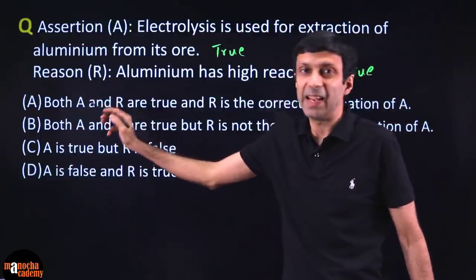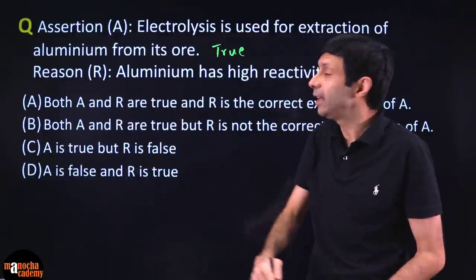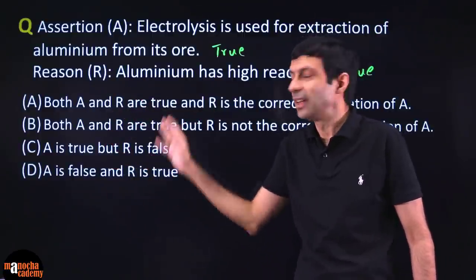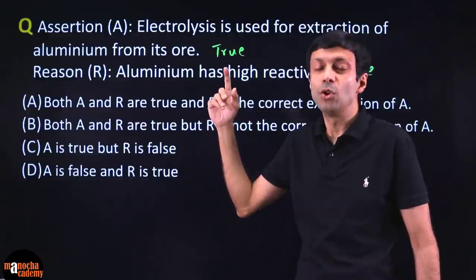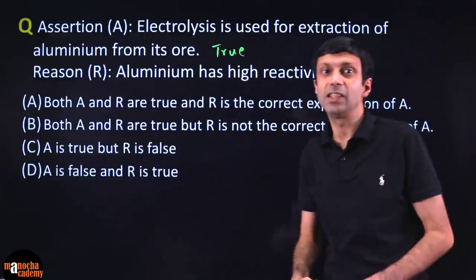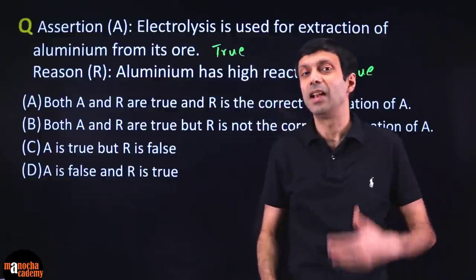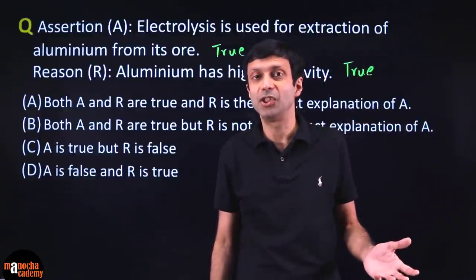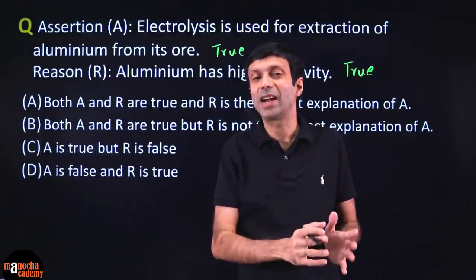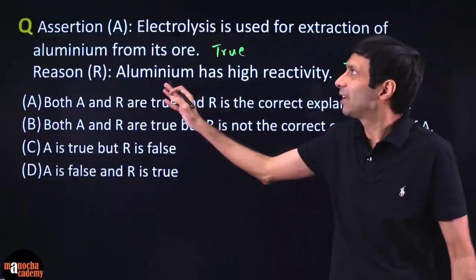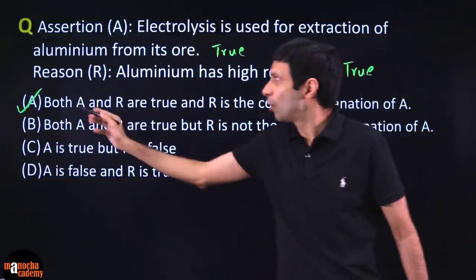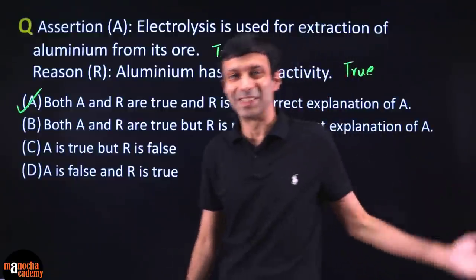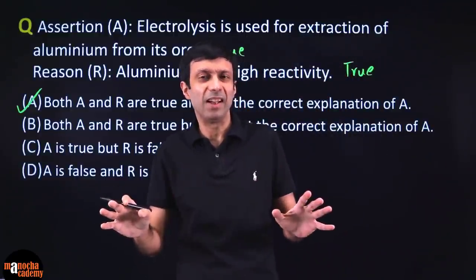Now we need to focus on options A and B, because both assertion and reason are true. We really need to see if the reason is the correct explanation of the assertion. We definitely know that electrolysis is used for the extraction of highly reactive metals like sodium, potassium, or aluminum. We have to use electrolysis because other reducing agents are not effective in removing these highly reactive metals from their ores. So the reason is the correct explanation of the assertion — option A.